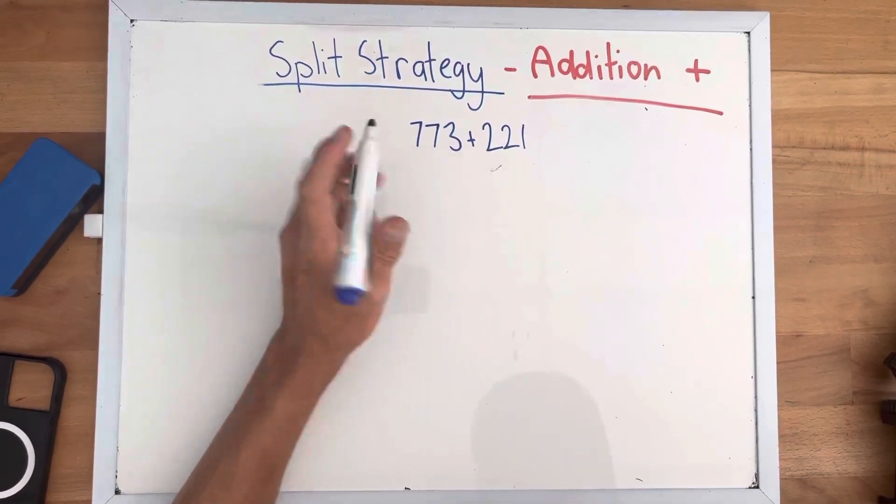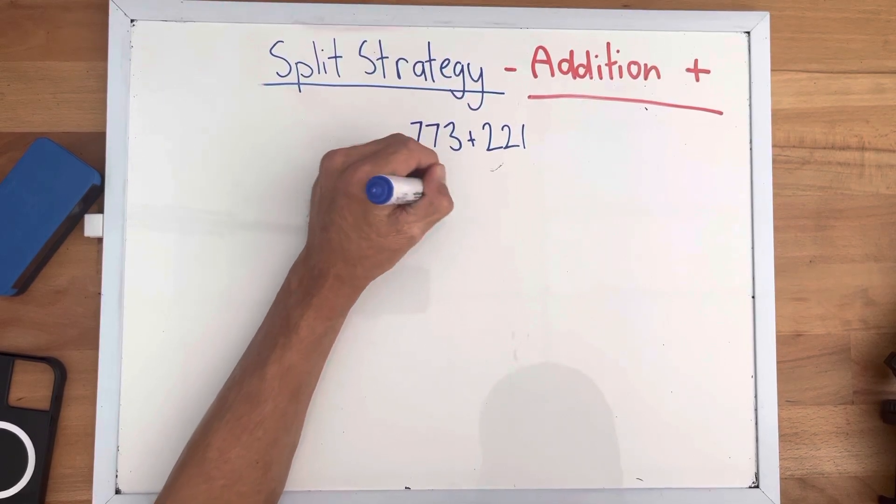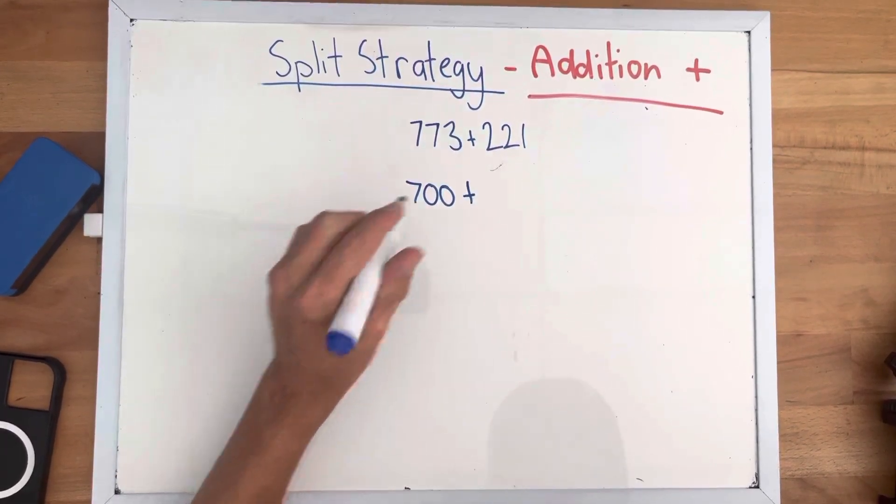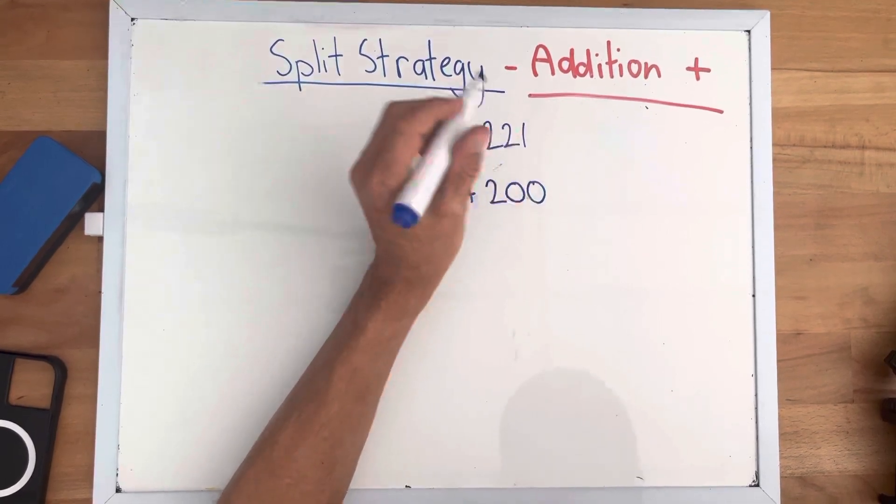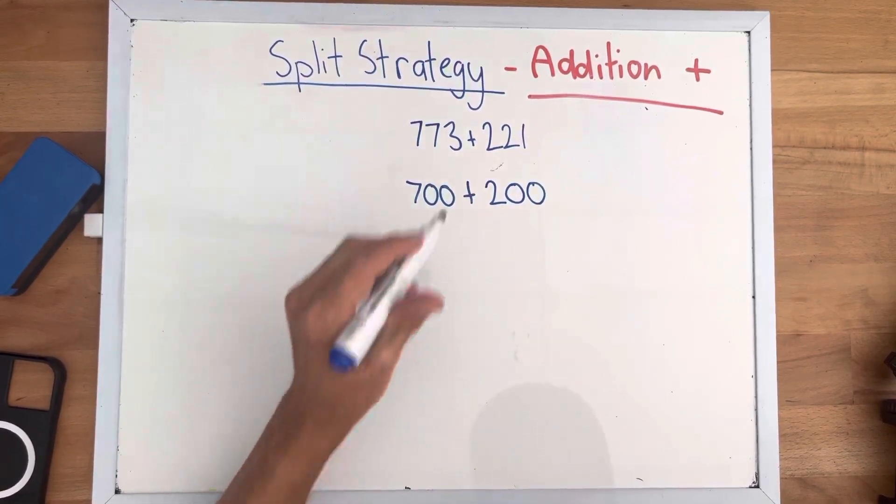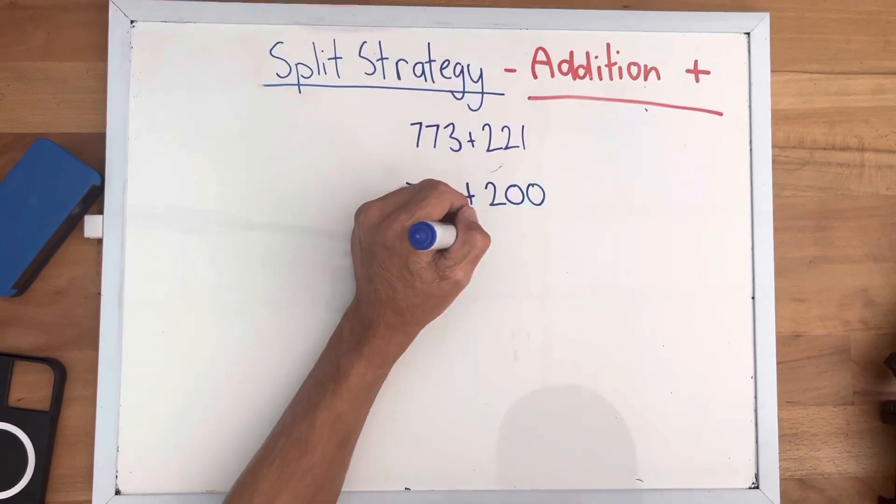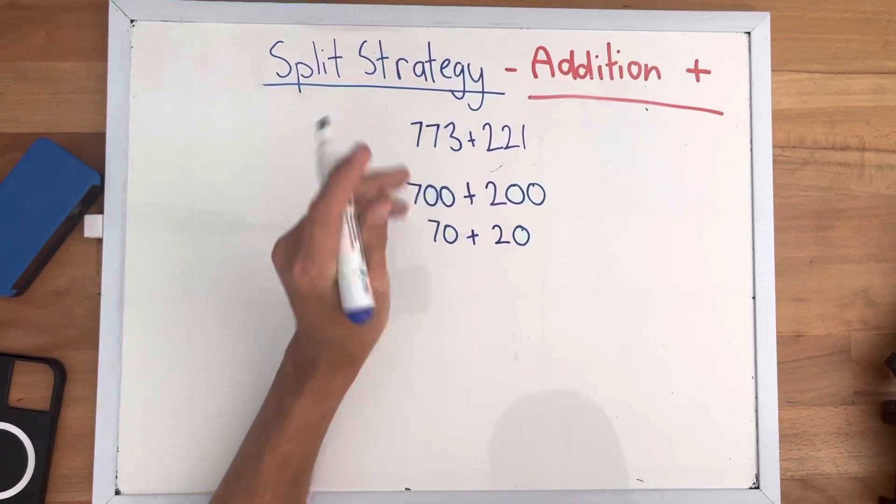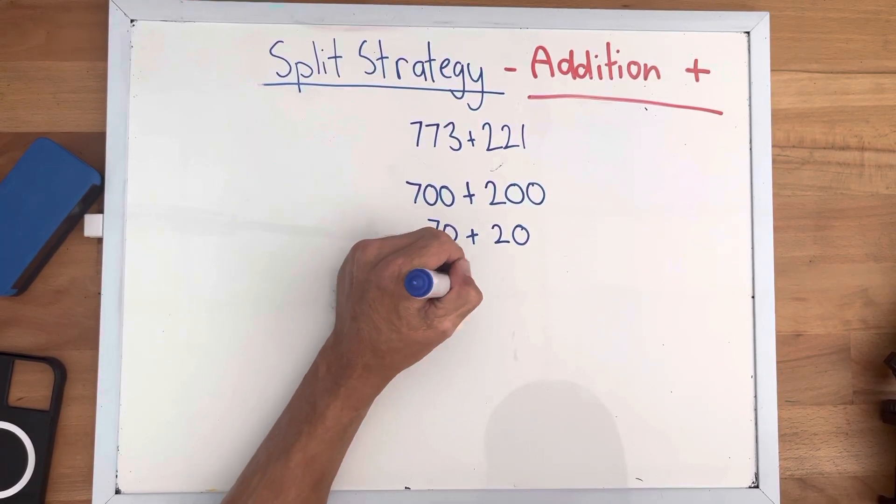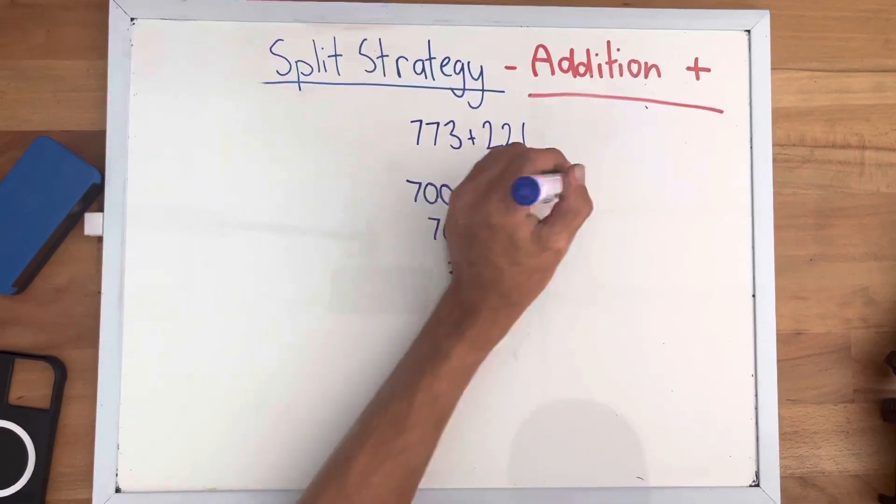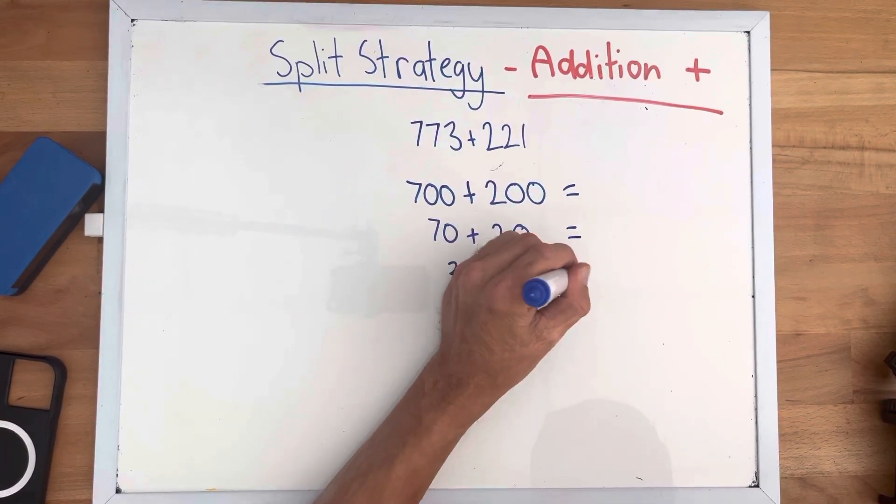In 773, our hundreds are 700. And in 221, our hundreds are 200. And then our tens are 70 and 20. Our ones are 3 and 1. Now let's add all those together.